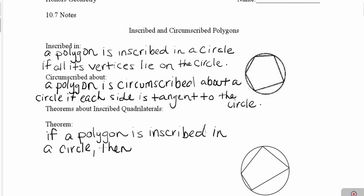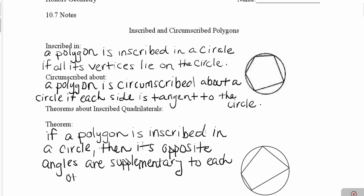So for example, if you look at the diagram I have here to the right, I'm going to say that quadrilateral ABCD is inscribed in circle O. So the conclusion we could make based upon this theorem...